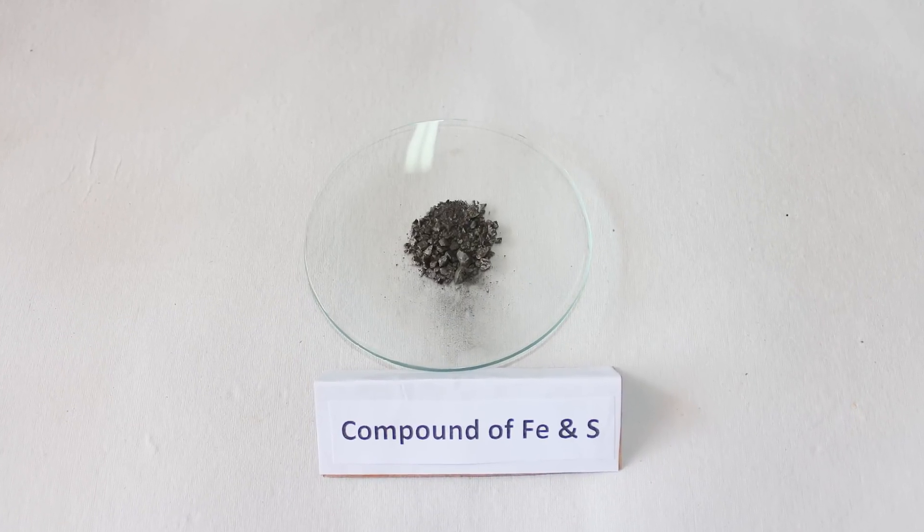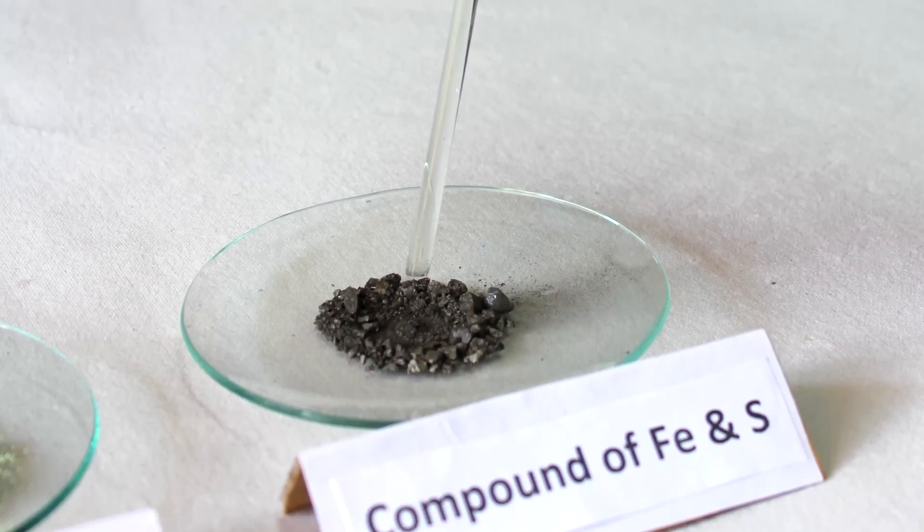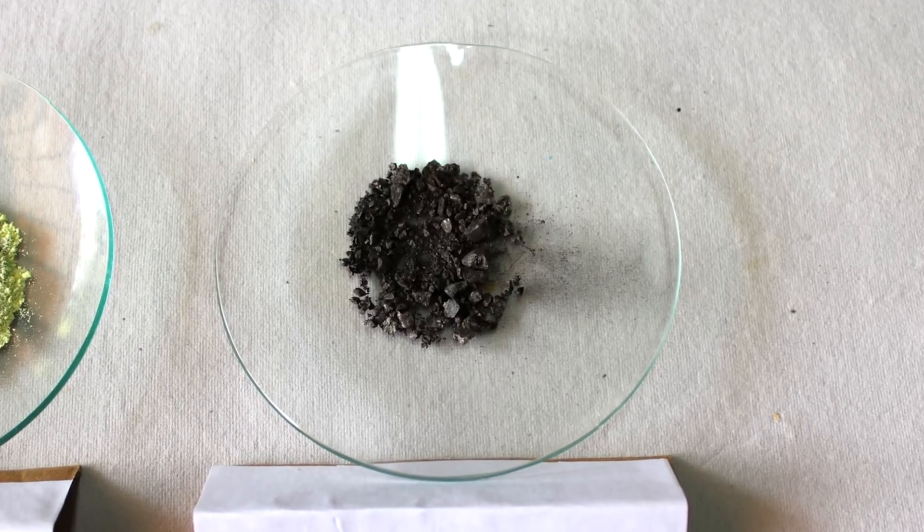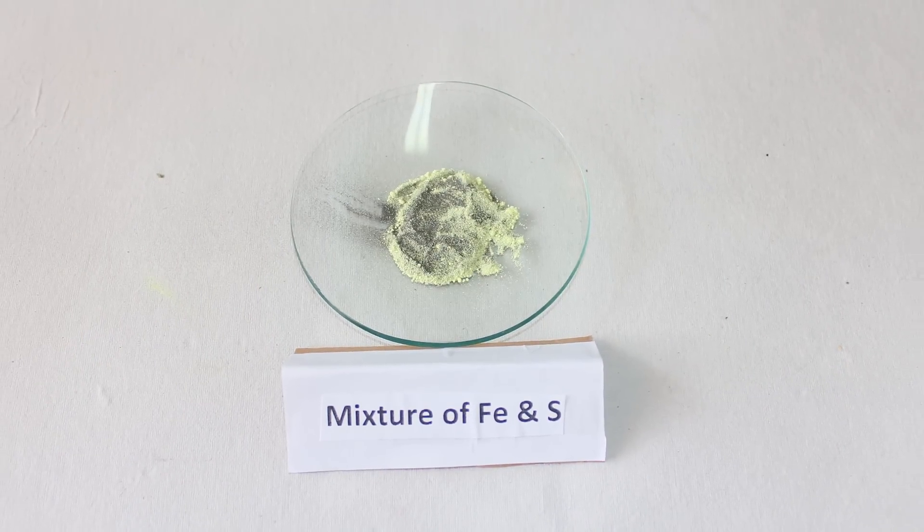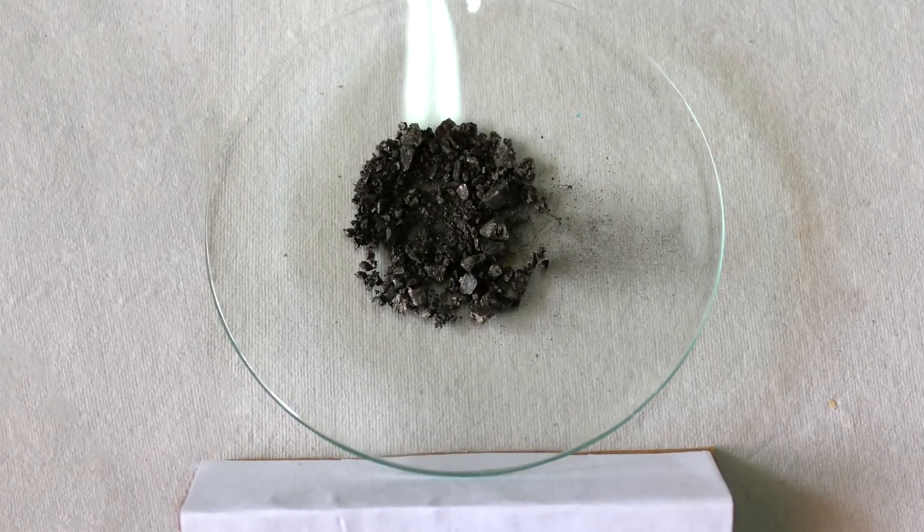Now, take ferrous sulphide in another watch glass and mix it using another glass rod. Here, we cannot see iron filings or sulphur. Thus, we infer that the mixture is heterogeneous and the compound is homogenous in nature.